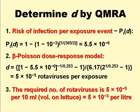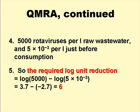We now use the beta-Poisson dose-response model to calculate D for this value of P(I|AD), and as shown on the slide, D is 5 times 10 to the minus 5 rotaviruses. This is the number of rotaviruses per 10 ml — the volume of treated wastewater remaining on 100 grams of lettuce — or 5 times 10 to the minus 3 rotaviruses per litre. So there are 5,000 rotaviruses per litre of raw wastewater, and 5 times 10 to the minus 3 per litre just before consumption. Therefore, the required log unit reduction is log of 5,000 minus log of 5 times 10 to the minus 3, which equals 6.